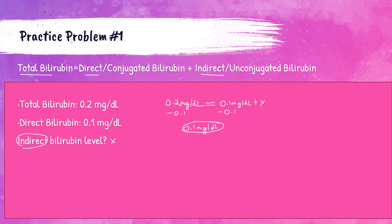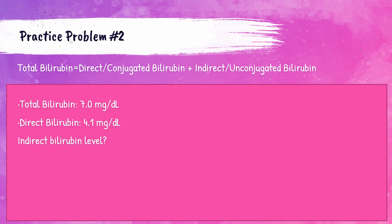The indirect bilirubin normal reference range is 0.2 to 0.8 milligrams per deciliter, so this patient is slightly below that at 0.1. This is insignificant — if it's a little less than the normal reference range, that's acceptable. It's only an issue when bilirubin is elevated higher than the normal reference range.